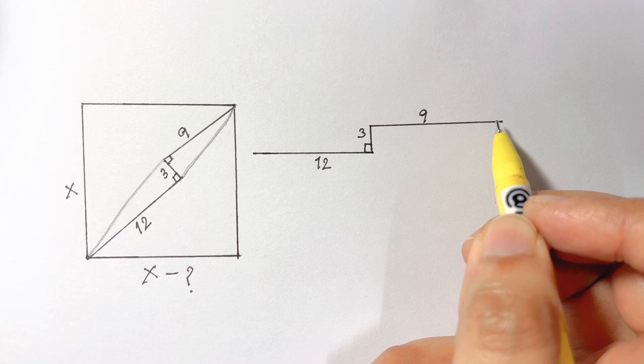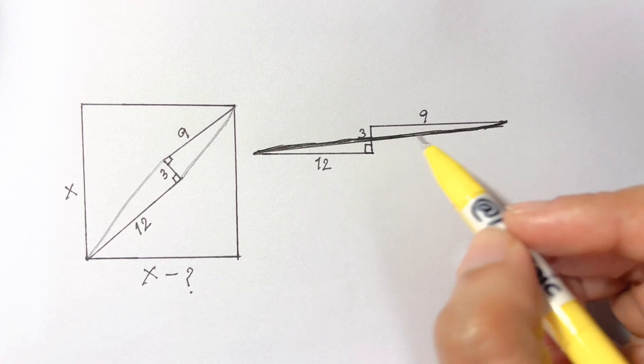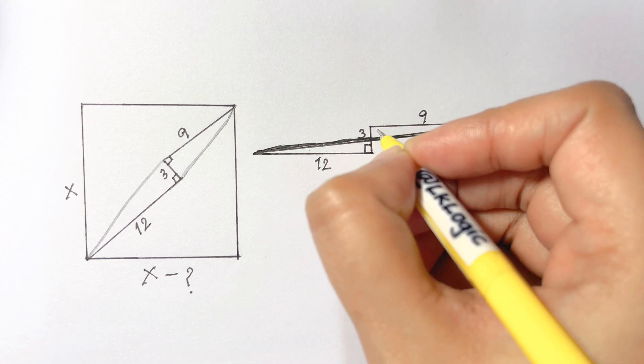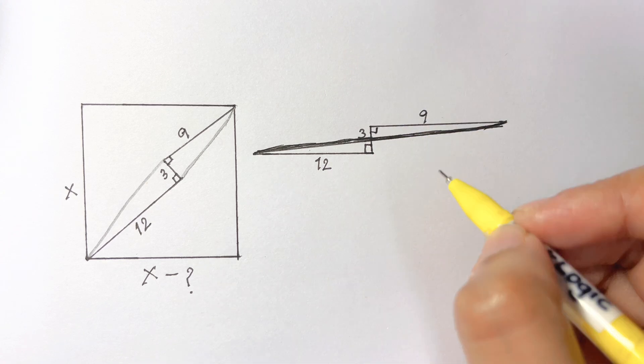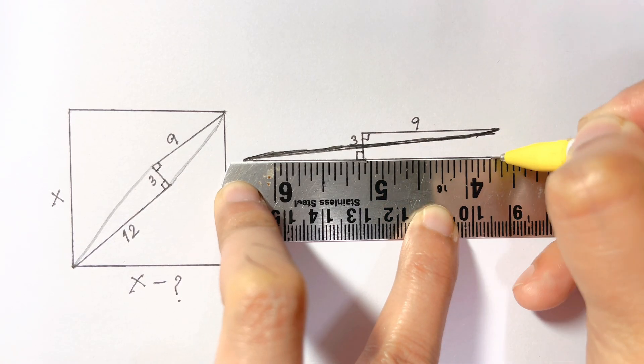If we lower the line segment equal to 9 we get a rectangle, and this line segment will be equal to 3 as it is.